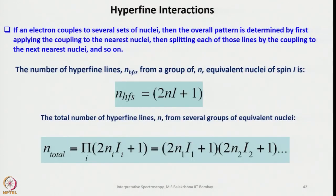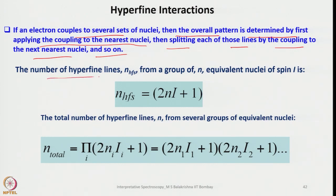Hyperfine splitting happens because of hyperfine interaction. If an electron couples to several sets of nuclei, the overall pattern is determined by first applying the coupling to the nearest nuclei and then splitting each of those lines by the coupling to the next nearest nuclei, and so on — very similar to writing a splitting tree or coupling interaction tree in NMR. The number of hyperfine lines is called N_HFS, and for a group of N equivalent nuclei of spin i we use 2Ni+1.